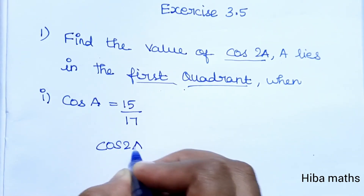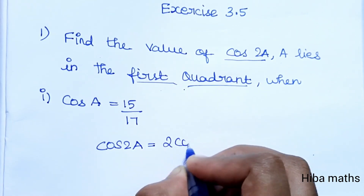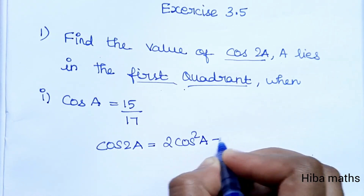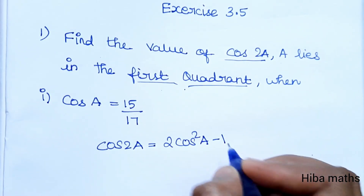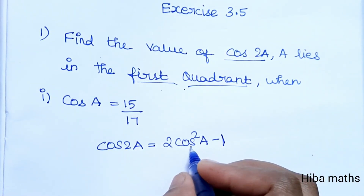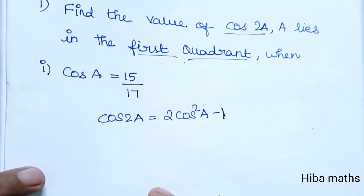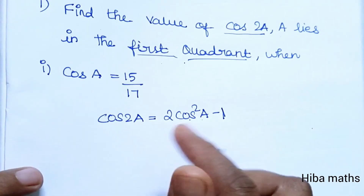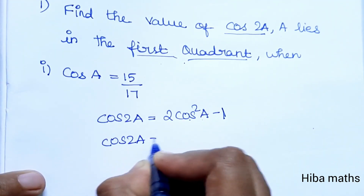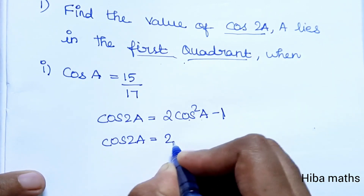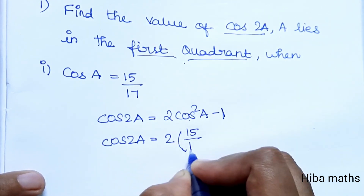For the first subdivision, cos 2A is equal to 2 times of cos²A minus 1. Using this formula, we will get the value of cos 2A.